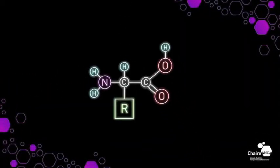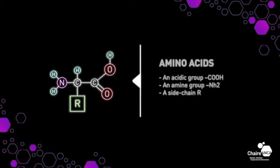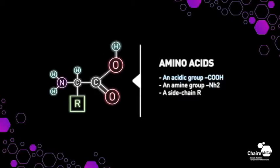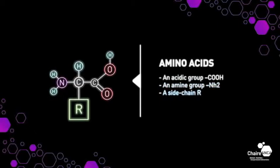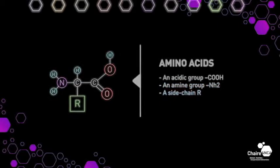A protein is made up of basic elements, amino acids, chained to each other. So what is an amino acid? It is a simple molecule composed of an acidic group, an amine group, and a side chain that characterizes the amino acid.